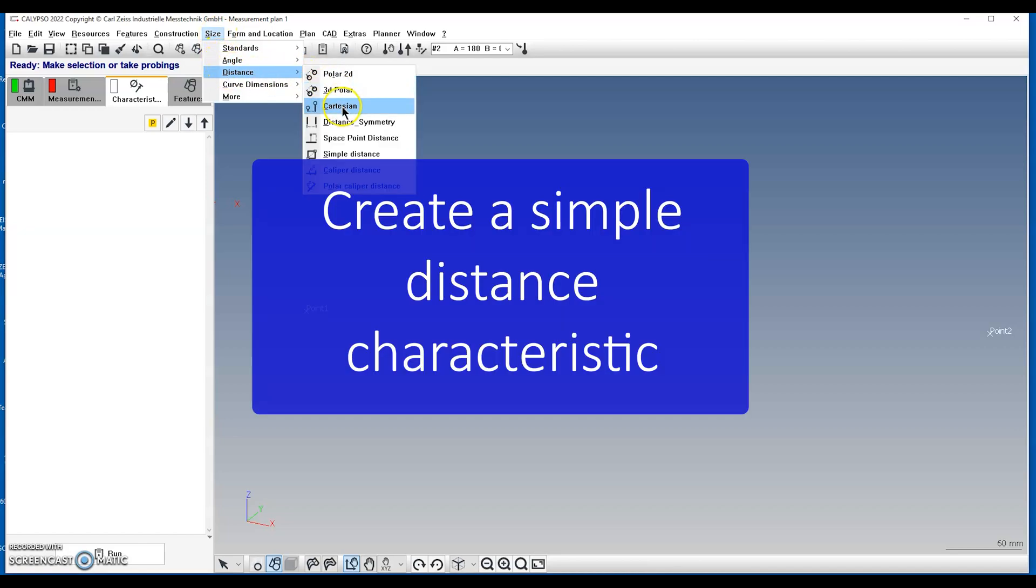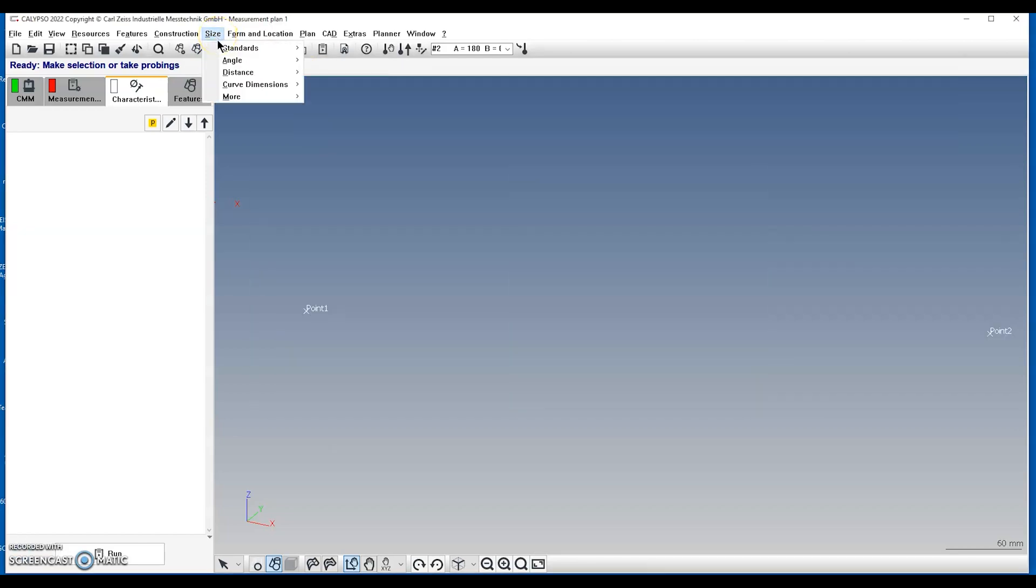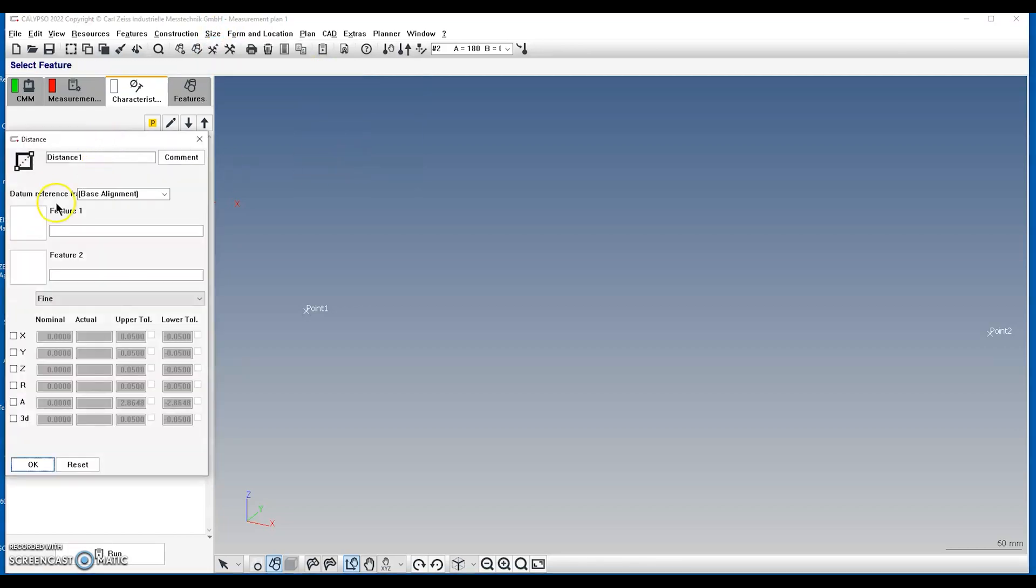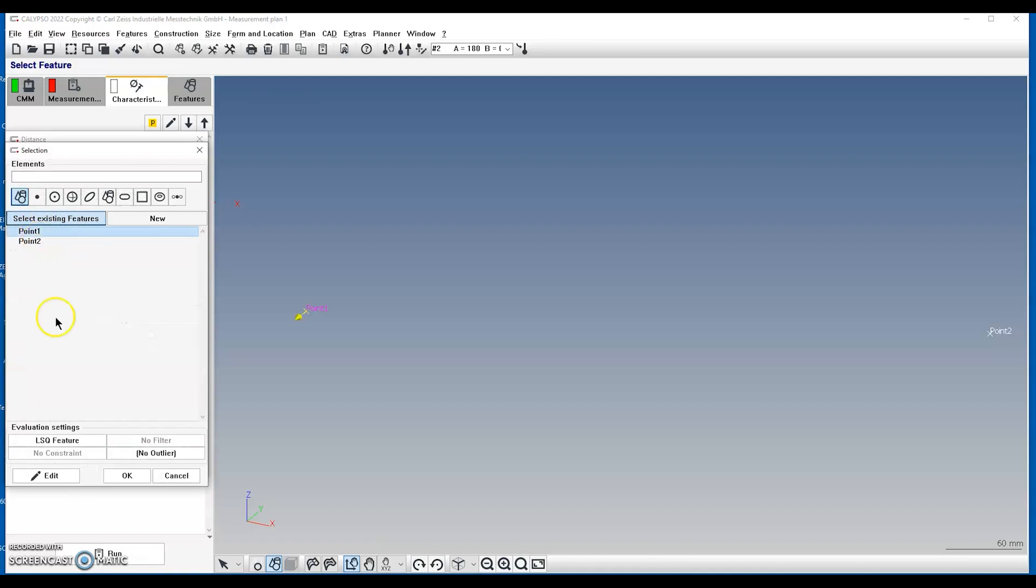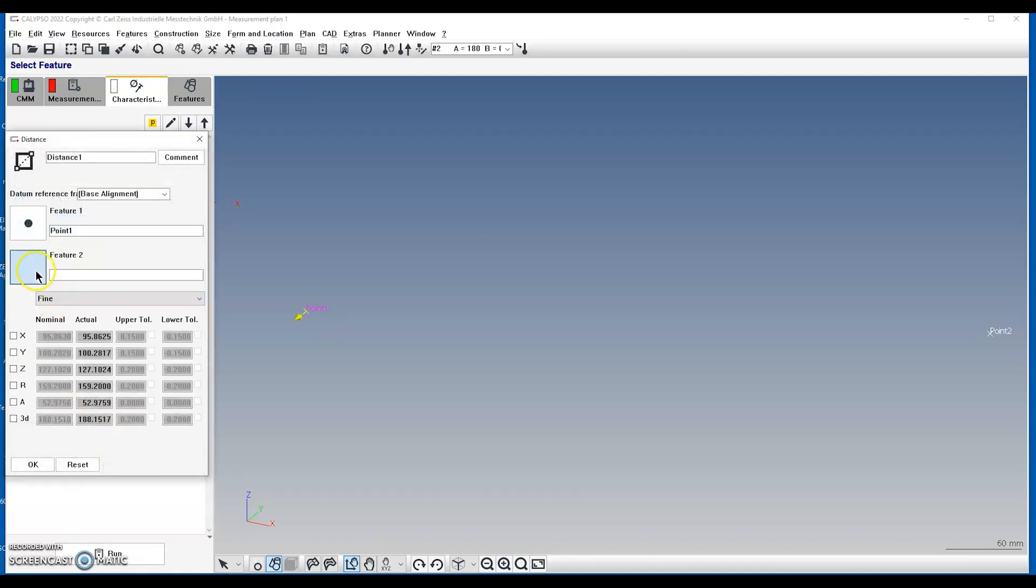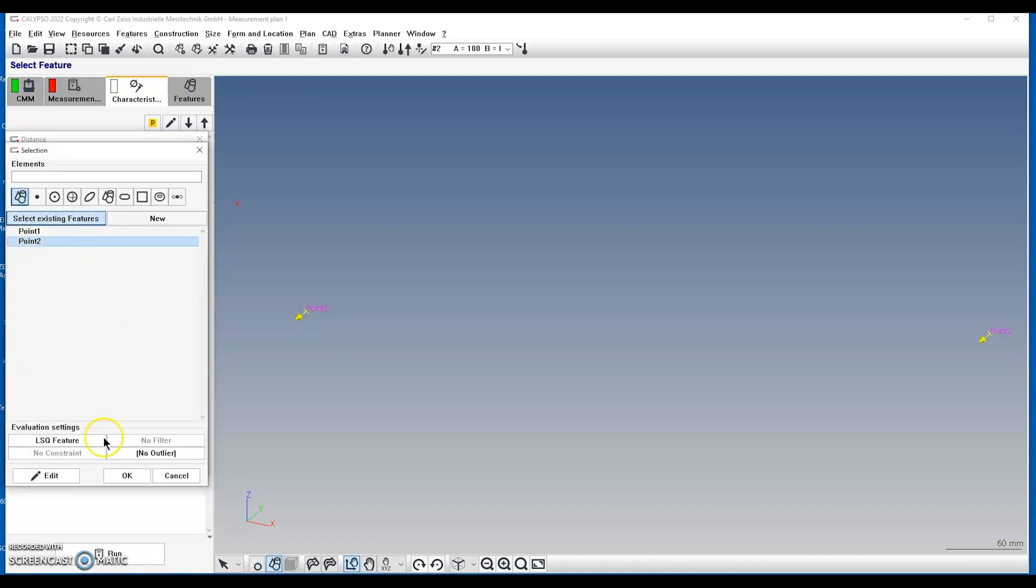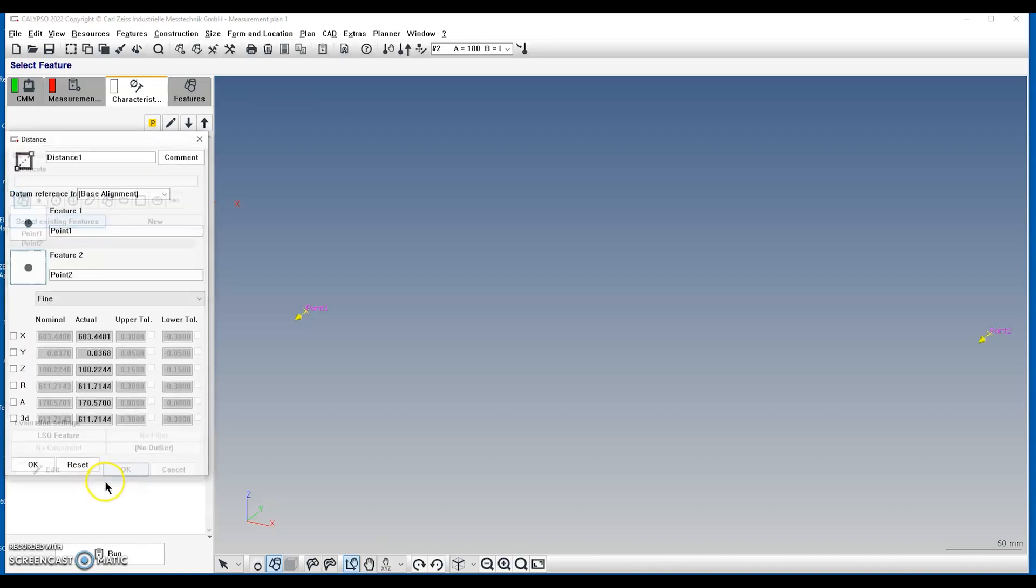Create a simple distance characteristic between the two points you just measured. Make sure the distance in the y direction is 0.04 or smaller. If it's greater, loosen your hardware, adjust the tool rack, re-tighten the hardware, and repeat this process of probing a point on the left and right side and creating that simple distance in the y direction.